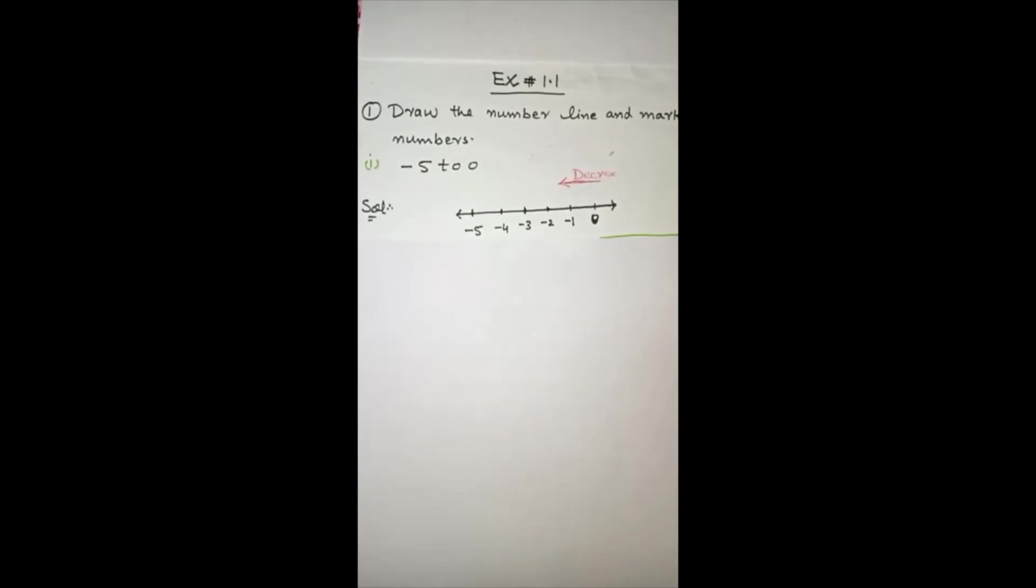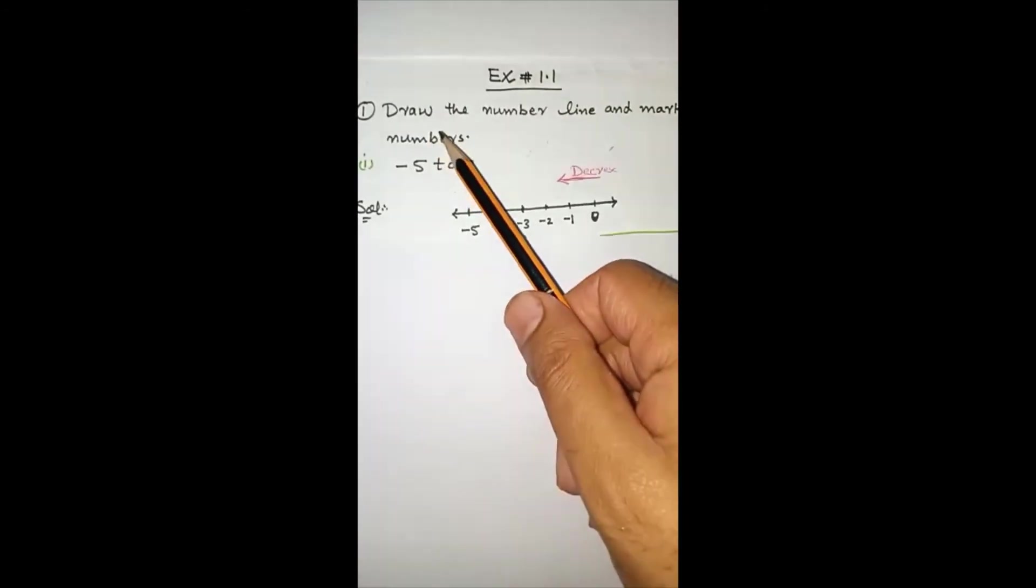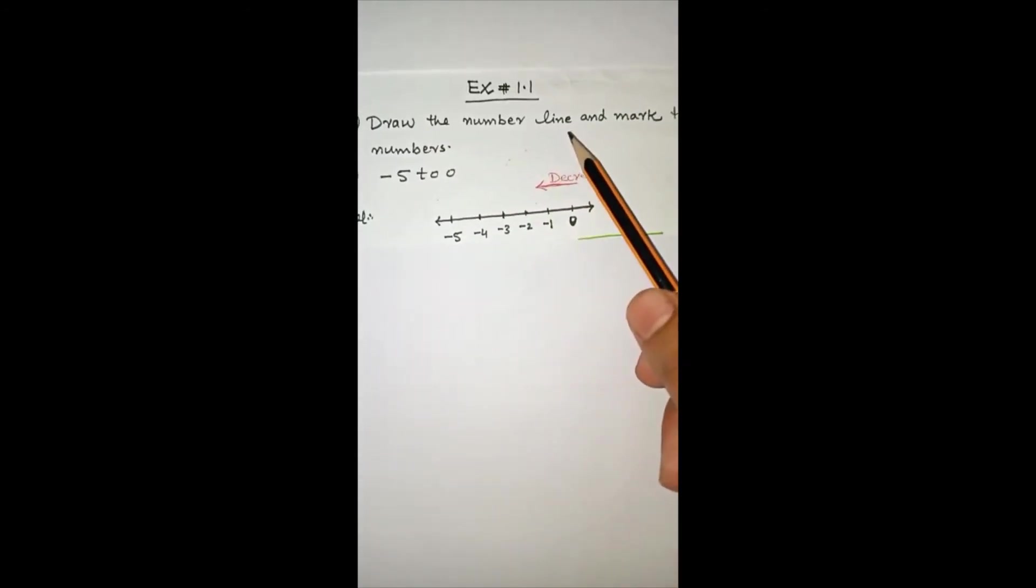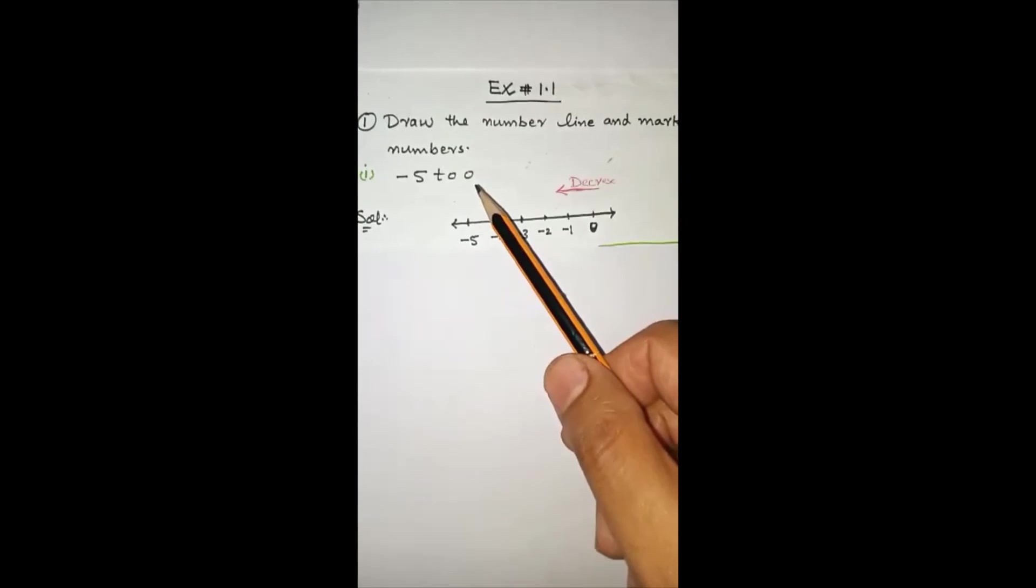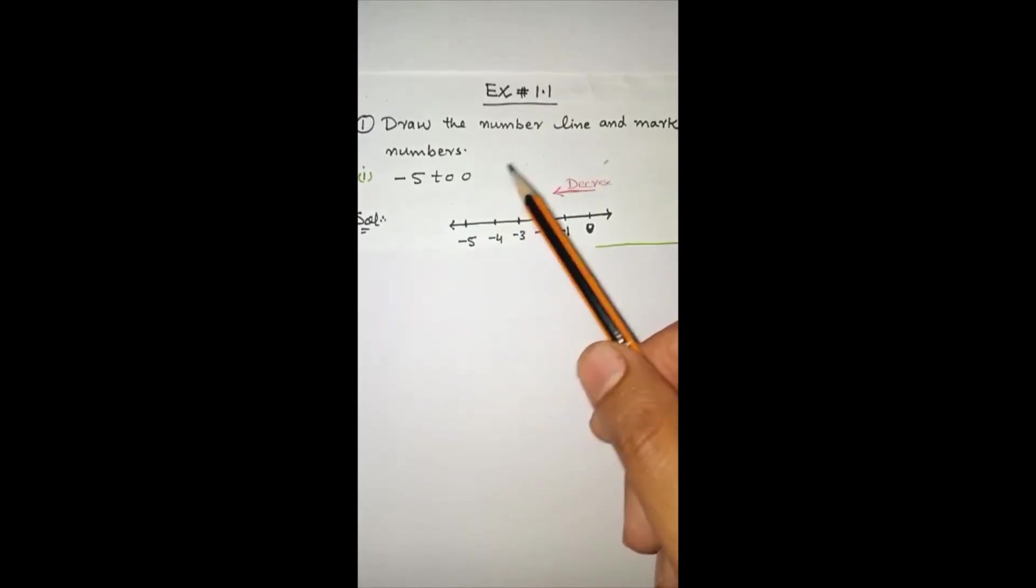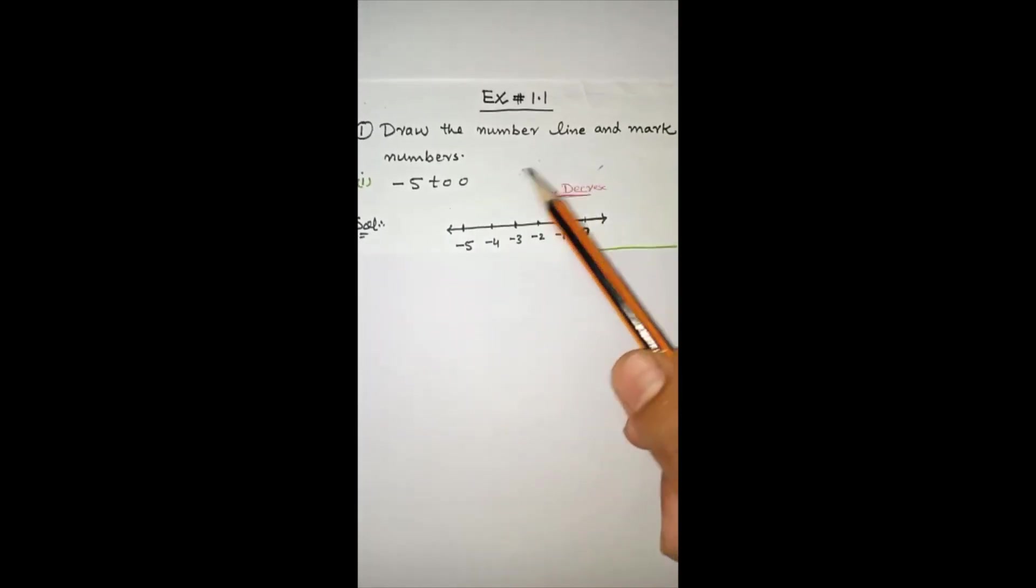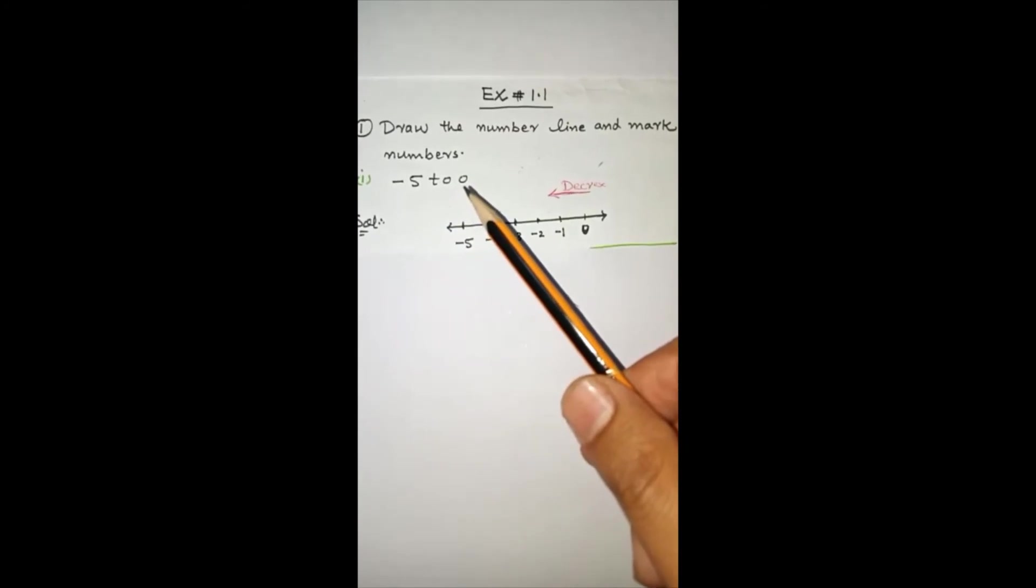Now we are going to exercise number 1.1, question number 1: Draw the number line and mark the following numbers, minus 5 to 0. Question number 1 asks us to mark on the number line from minus 5 to 0.